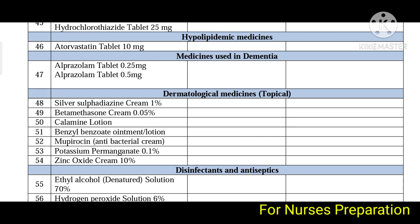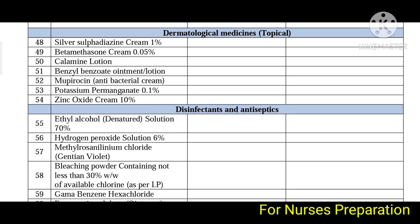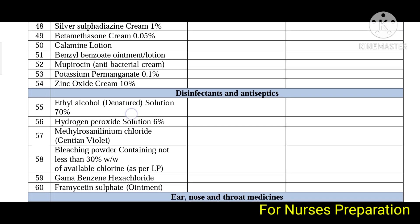Dermatological medicines include silver sulfadiazine, betamethasone, calamine lotion, benzyl benzoate ointment or lotion, mupirocin — which is an antibacterial cream — potassium permanganate 0.1%, and zinc oxide cream 10%.